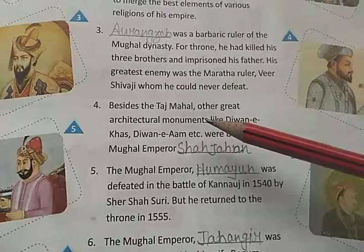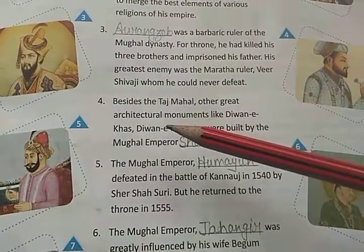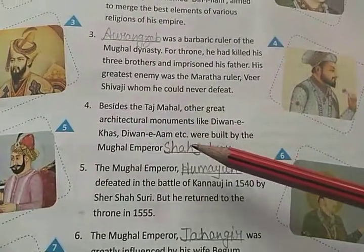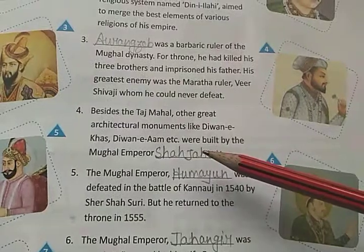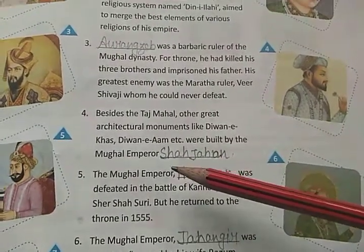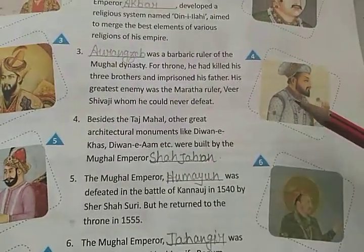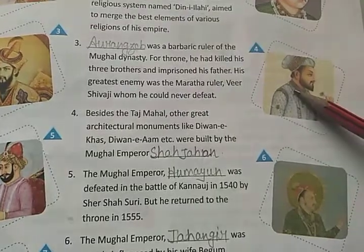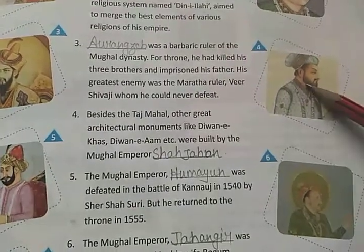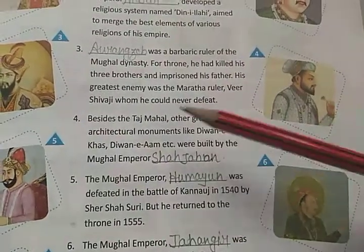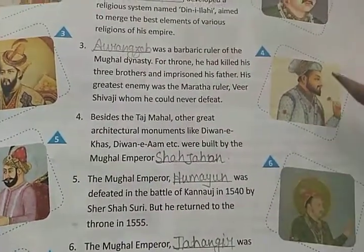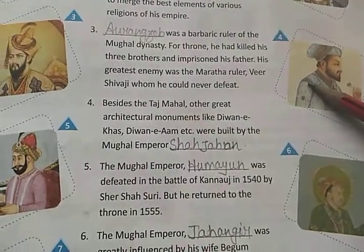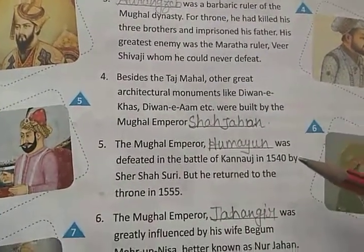Besides the Taj Mahal, other great architectural monuments like Diwan-i-Khas and Diwan-i-Aam were built by Mughal Emperor Shah Jahan. Jo Taj Mahal hum dekhne ko milta hai, wo Samrat Shahjahan ne banwaya tha.